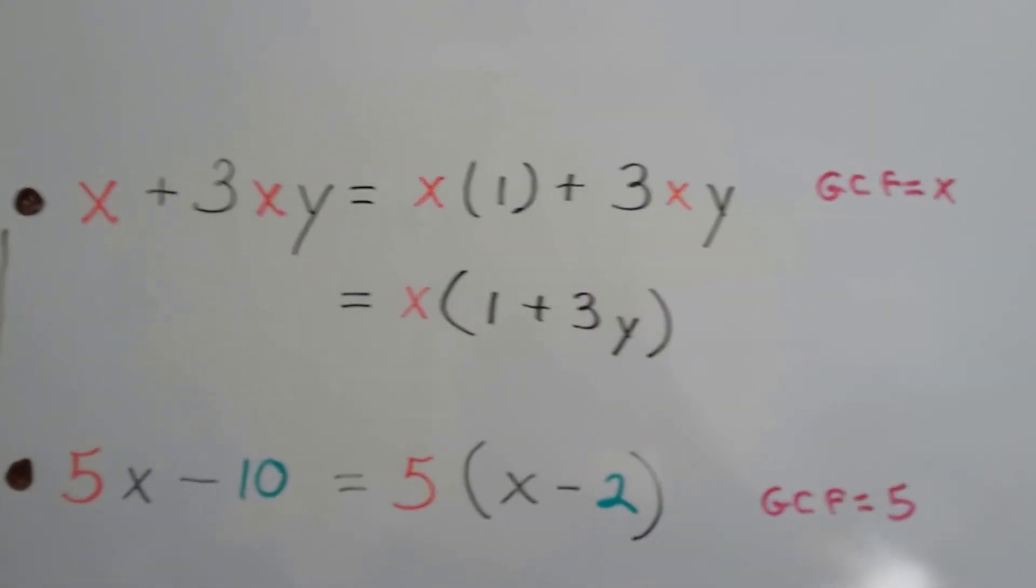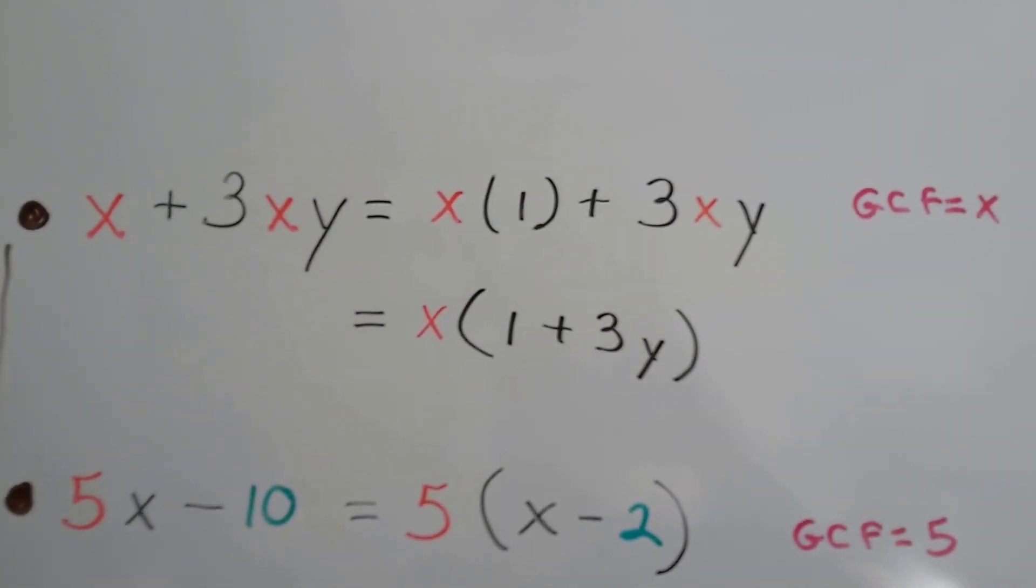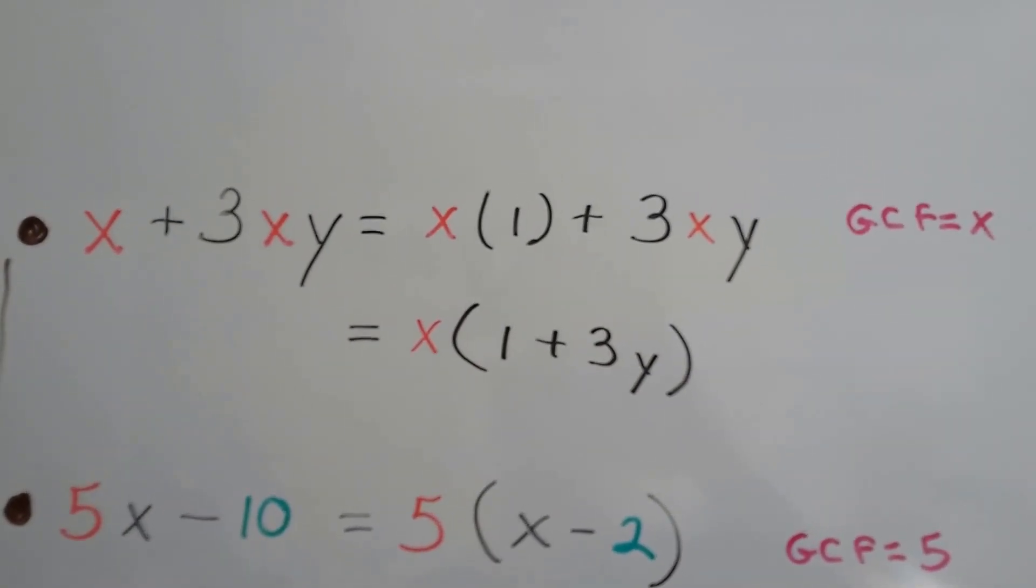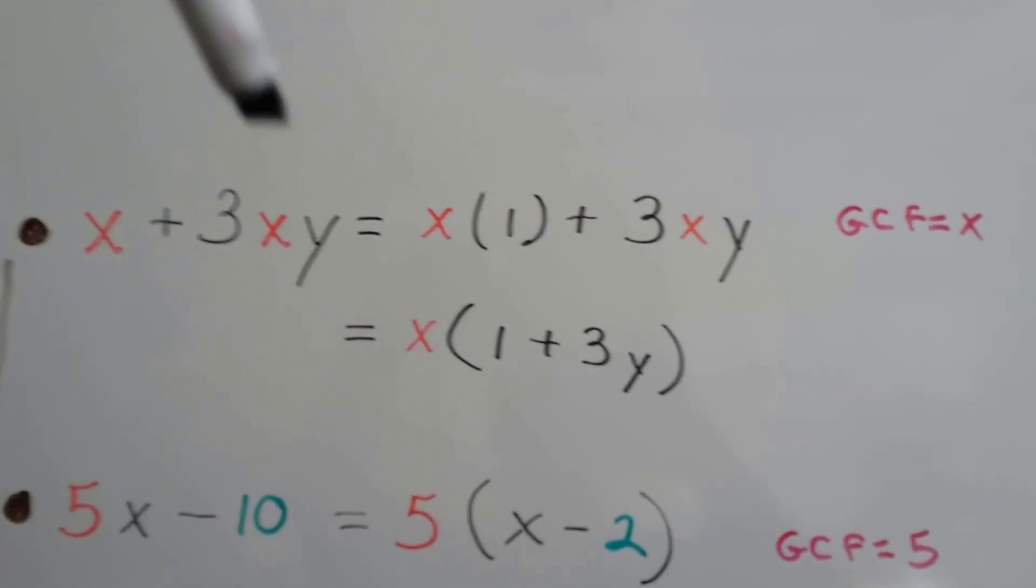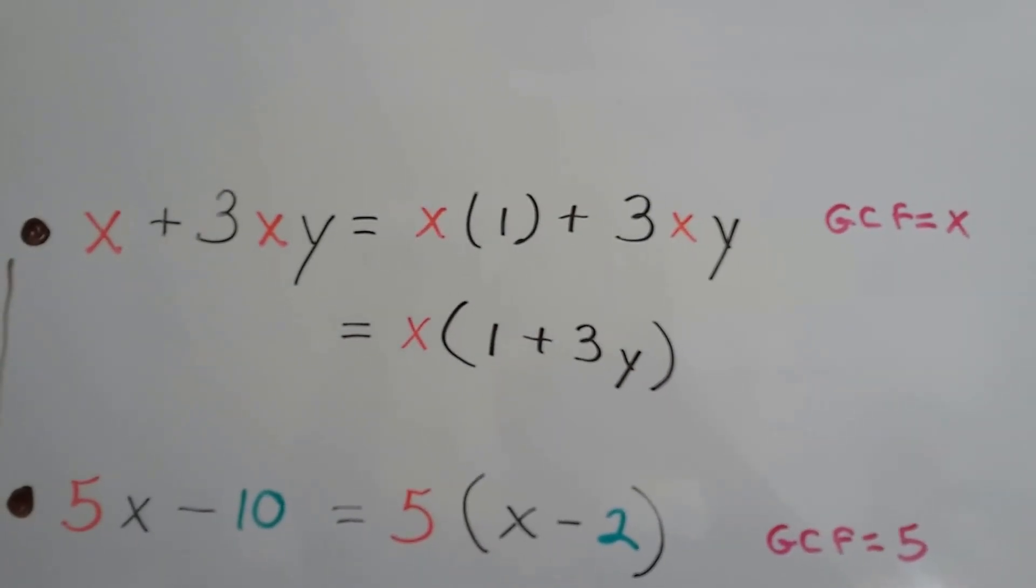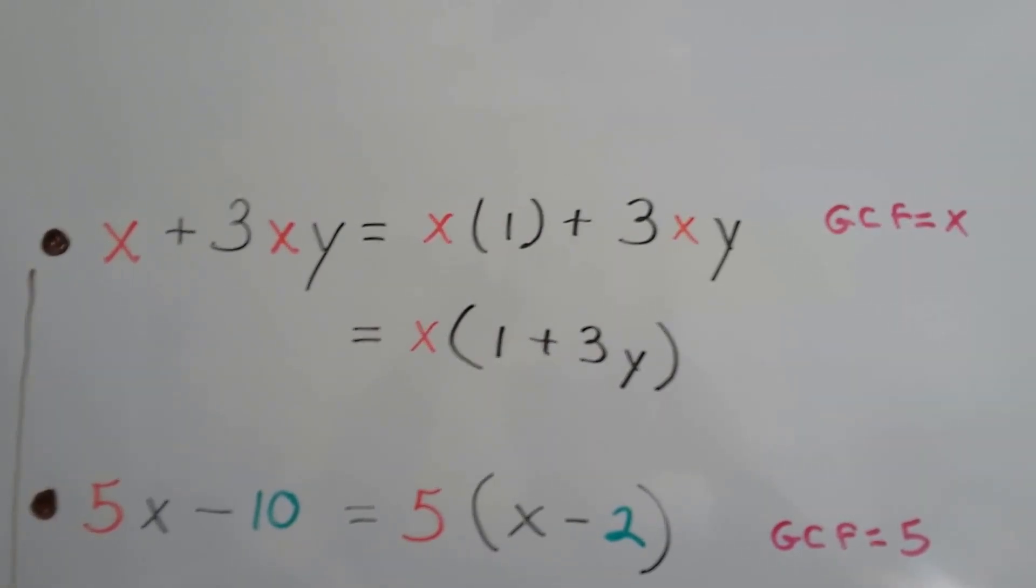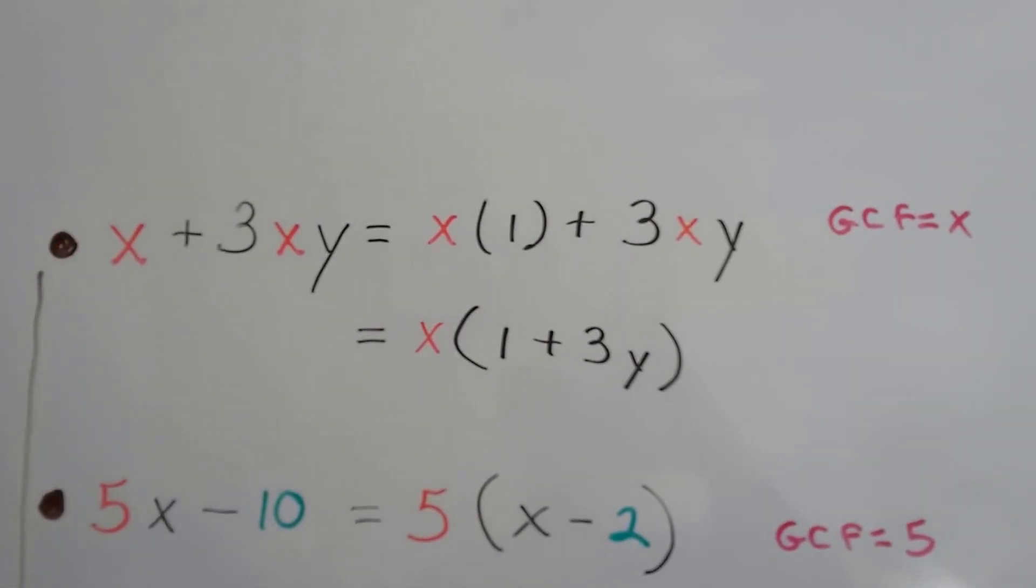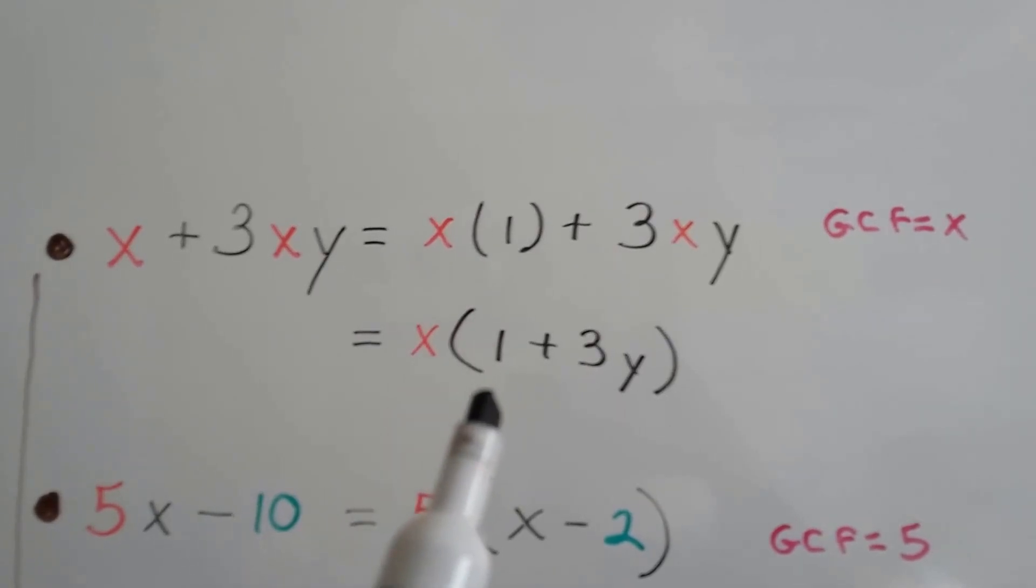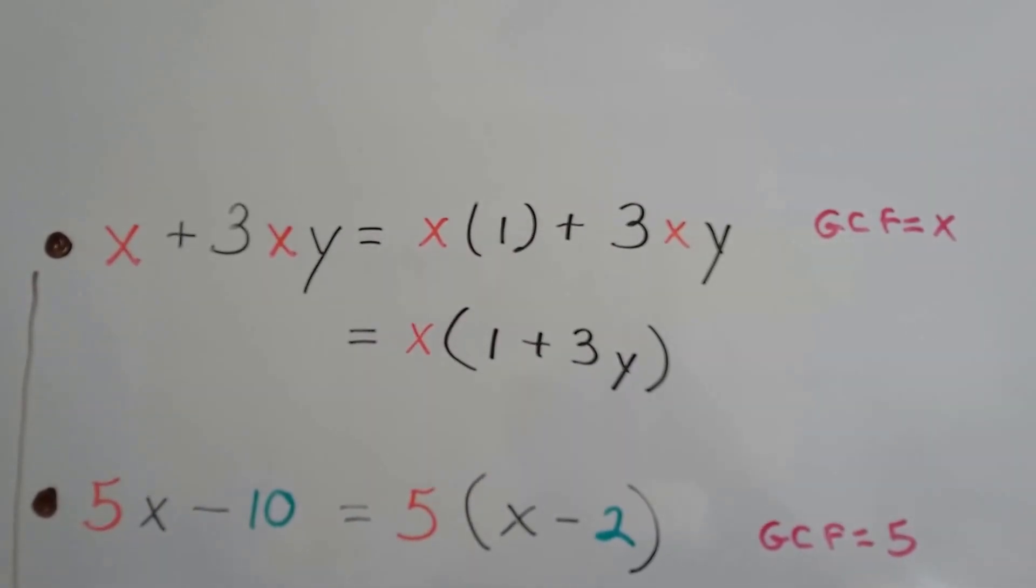We got a couple more. If we have x plus 3xy, that x is in common in both terms. That would be the greatest common factor for both terms. That would be like x times 1 plus 3xy. And that would give us x times 1 plus 3y.